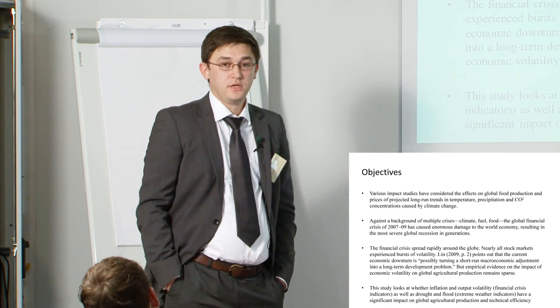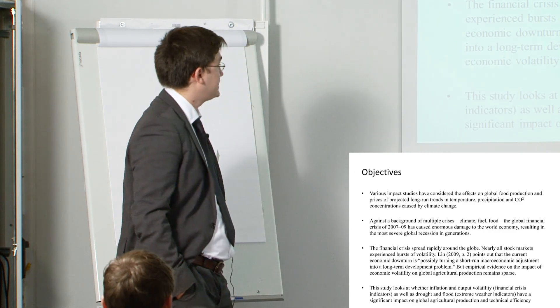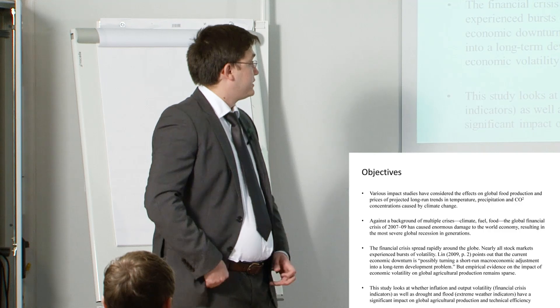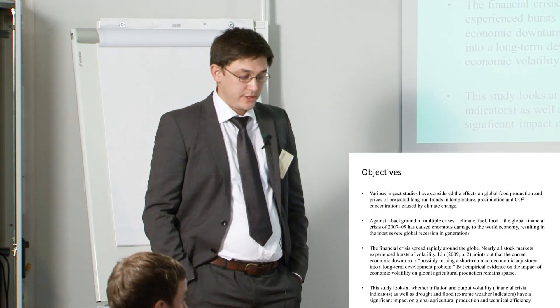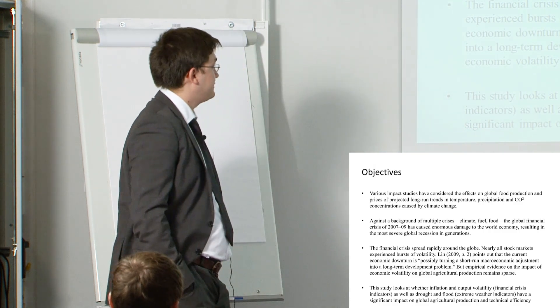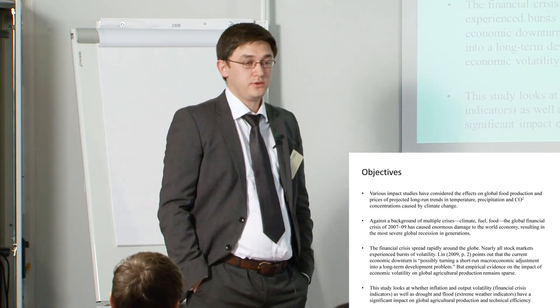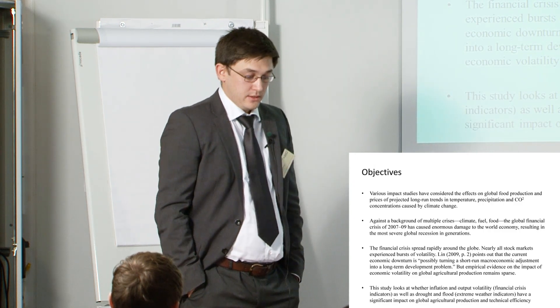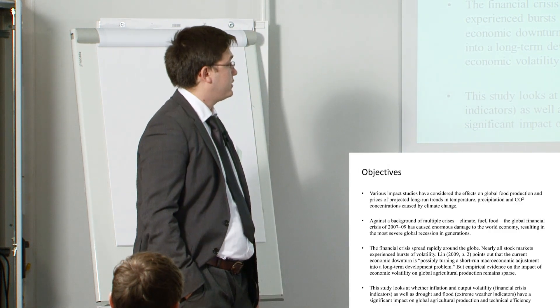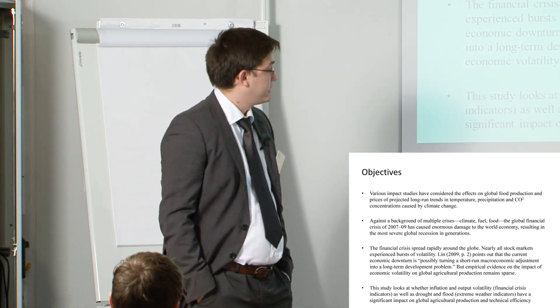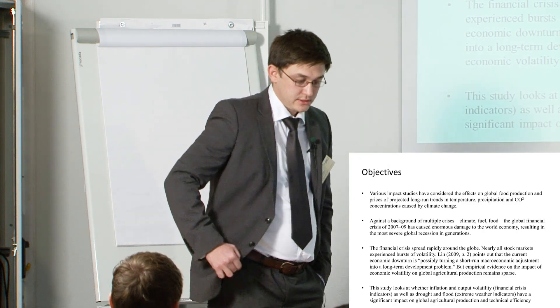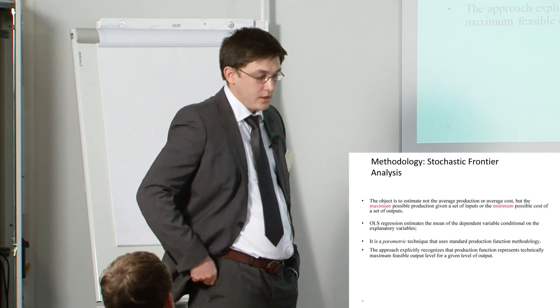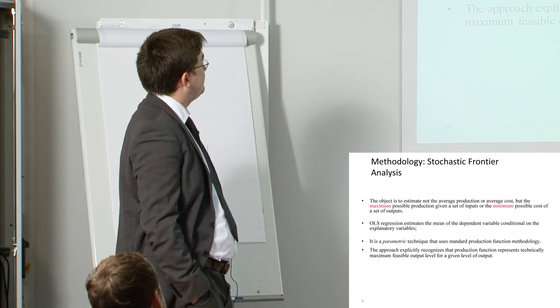For that there have been developed several models. We have seen one of them yesterday in the plenary session. But the problem with these kind of models is that you dictate the model how to behave. When we use historical data to see the impact of several indicators, in our case we use climate change indicators and financial crisis indicators, we will be able to see what was the effect to agricultural production. And moreover we also try to explain the technical efficiency by these variables.